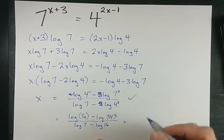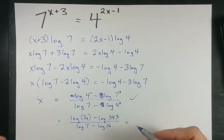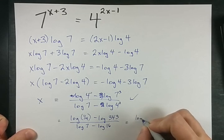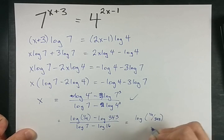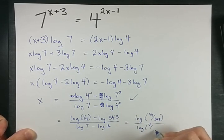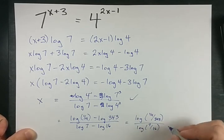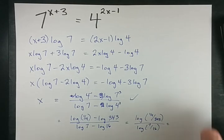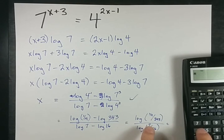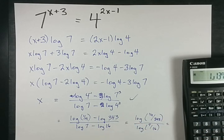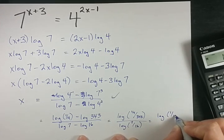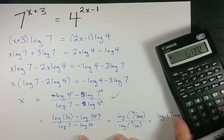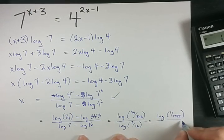And finally, when you have two logs that are subtracted from each other, that's the same as the log of the quotient. 1 quarter divided by 343 and 7 divided by 16. I don't think you can simplify these logs anymore. I will get you what this number is, though. 1 quarter divided by 343 gives me the log of 1 over 1372 over the log of 7 sixteenths.